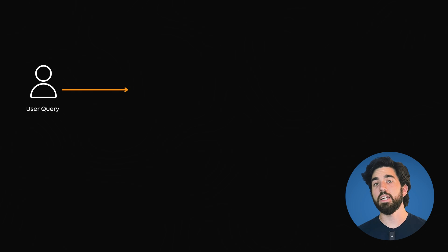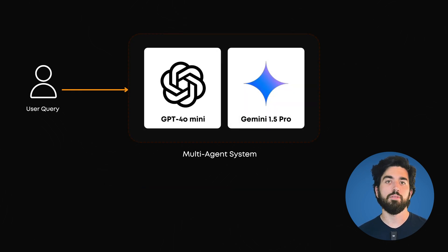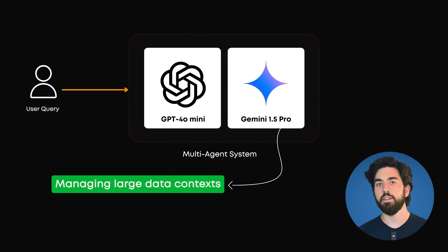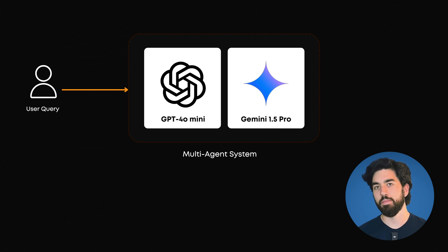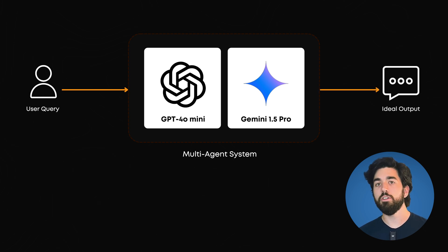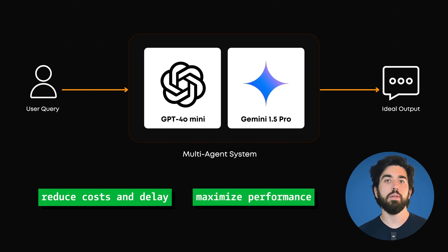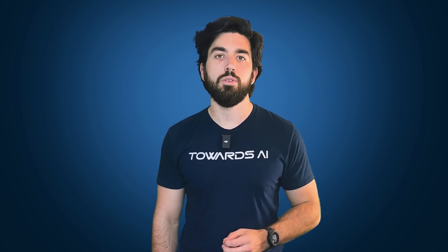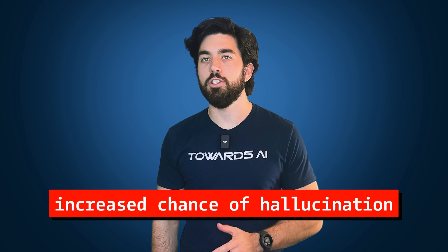Another example is using a smaller model, like GPT-4o Mini for easier tasks, or Gemini 1.5 Pro for managing large data contexts, which allows the multi-agent system to process entire books or large datasets effectively. Since you have multiple agents, you can use various LLMs for each task to reduce costs and latency and maximize performance, which can only be done in such systems. But of course, you'll want to be cautious about possible issues such as the increased chance of hallucination when multiple agents interact.